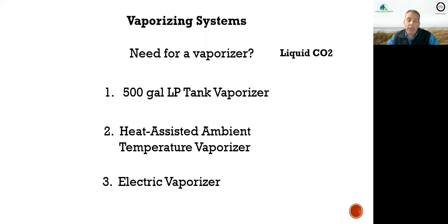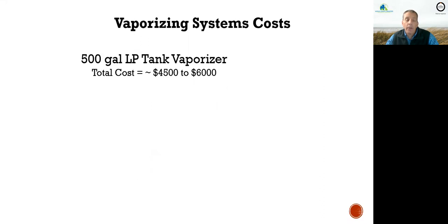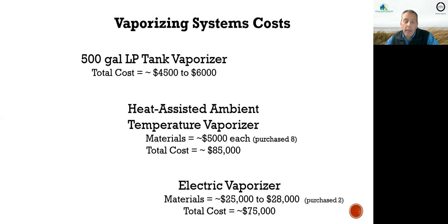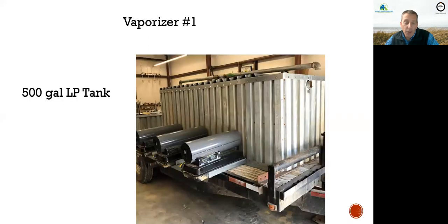The second vaporizer is a heat-assisted ambient temperature vaporizer. The third is an electric vaporizer — an electric unit that heats the liquid CO2. In terms of cost: the LP tank vaporizer is about $6,000 USD, the heat-assisted ambient temperature vaporizer is about $85,000 USD, and the electric vaporizer is about $75,000 USD.